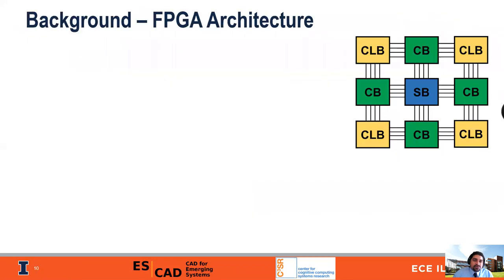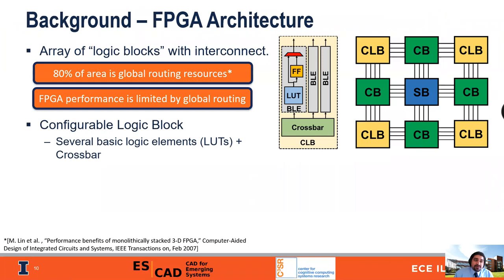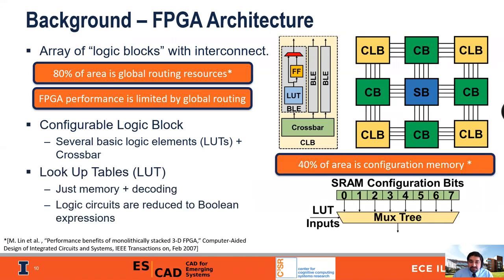Let's take a look at traditional FPGA architectures. An FPGA is comprised of an area of logic blocks with some global interconnect. Up to 80% of the FPGA's area can go into global routing resources, and the FPGA's performance — particularly its clock speed — is actually limited by global routing. The logic blocks themselves are comprised of lookup tables, which are just memory with some decoding or a MUX stream that stores the truth table of some Boolean expression. Up to 40% of the area in an FPGA can be consumed by configuration memory for the lookup tables and the global routing.